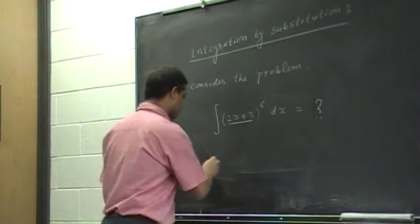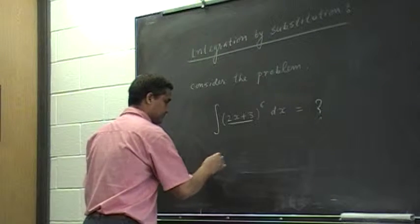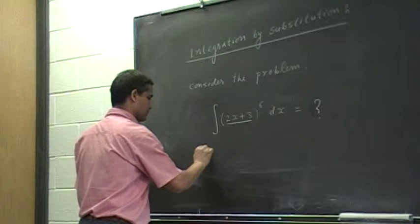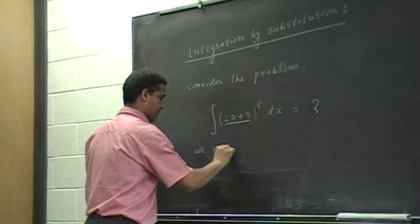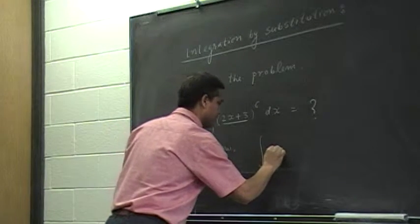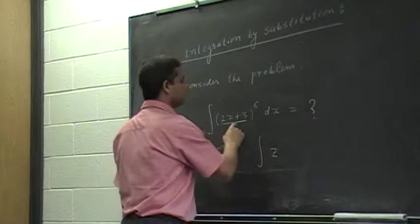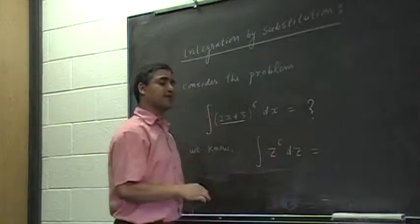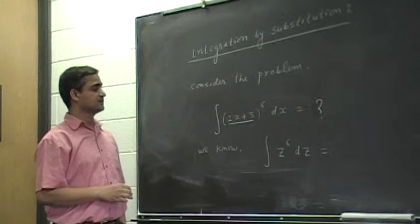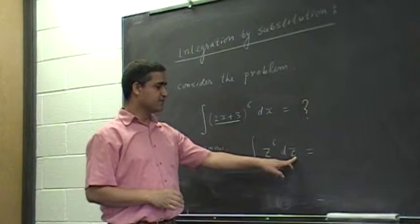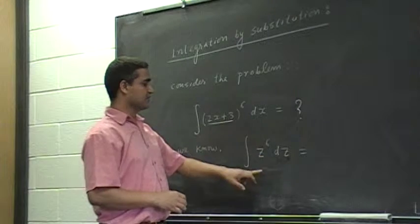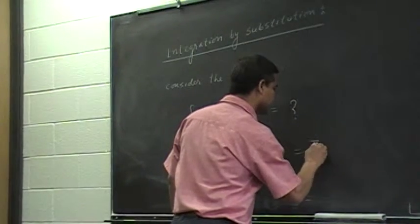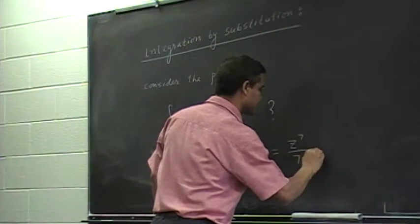If it were, like what we know is, if it were z to the 6 dz, we know how to integrate it, right? Because this variable dz, this is the differential of z and this is z to the 6. We know that z to the 7 over 7 plus constant of integration.